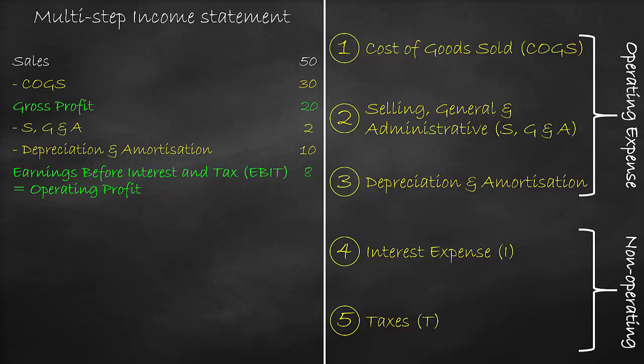Then, we deduct the fourth level of expense, which is the interest expense of $3 million. This will give us the third level of profit, which is called earnings before tax, of $5 million — calculated as $8 million minus $3 million. Earnings before tax is our profit level before we pay the last expense, which is tax.